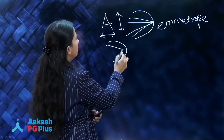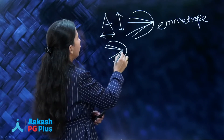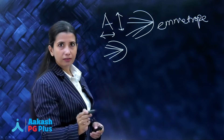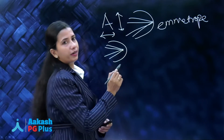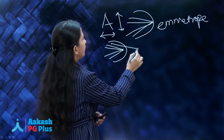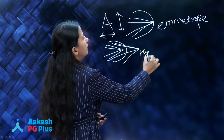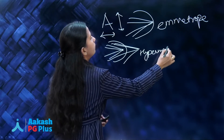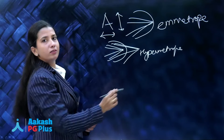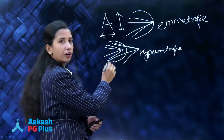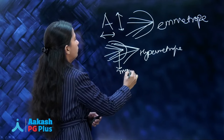If both the meridians are focusing at the same place but behind the retina, the patient is hypermetrope. If both of them are focusing at the same place but in front of the retina, the patient is a myope.